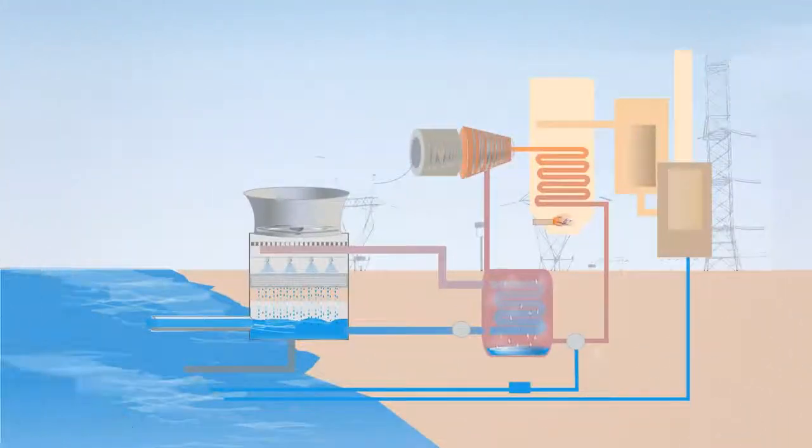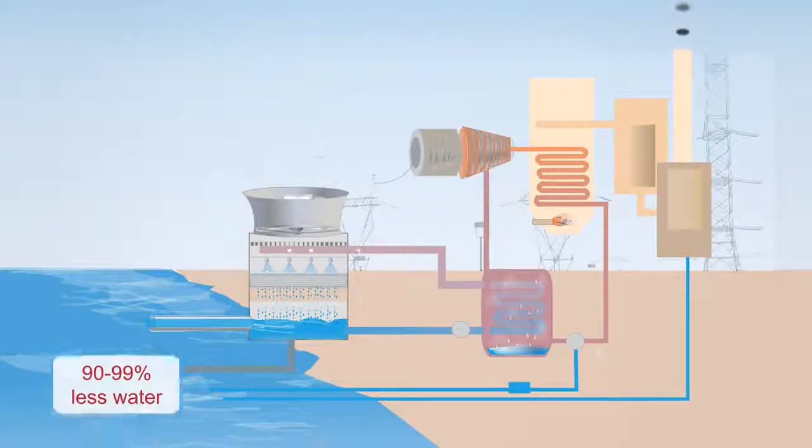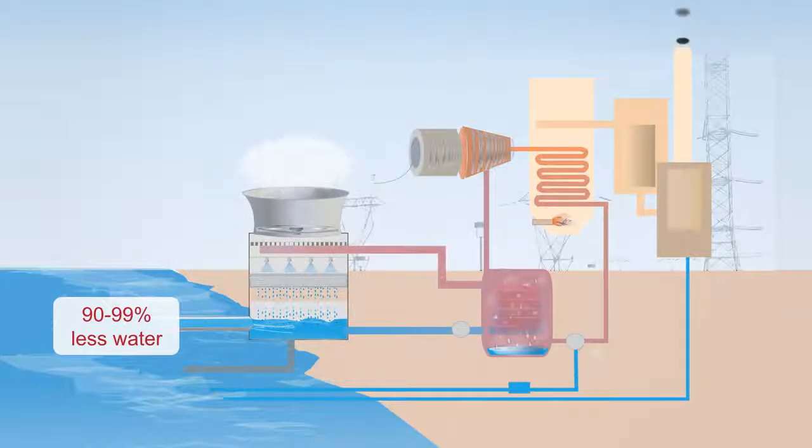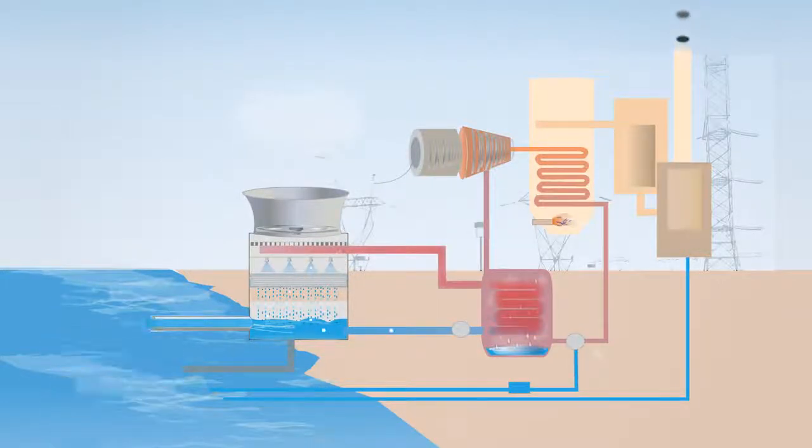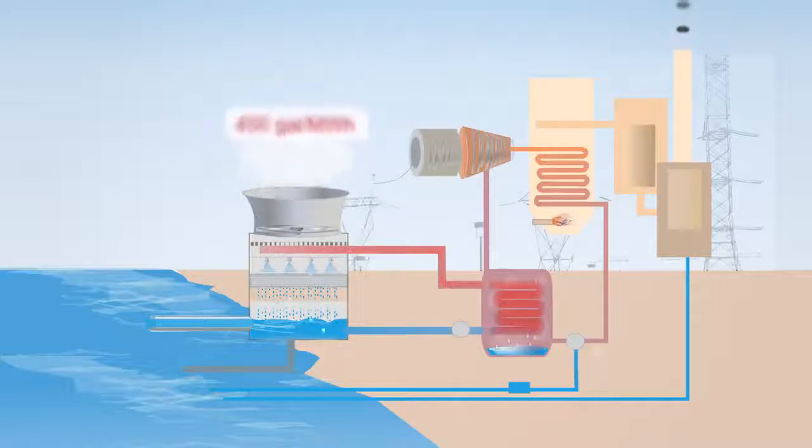The next option is a recirculating wet cooling system. This cooling system withdraws 90-99% less water than a once-through system, only about 600 gallons per megawatt hour. However, it loses most of it, 450 gallons per megawatt hour, to evaporation. After the water is withdrawn from the source, it is continuously circulated through a cooling tower and a condenser. As cooling water is lost, more water is required to make up for the difference in the system.